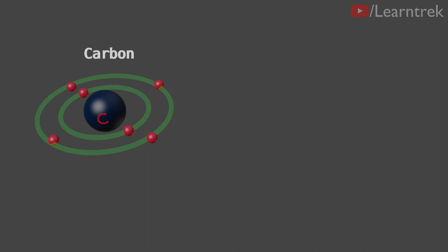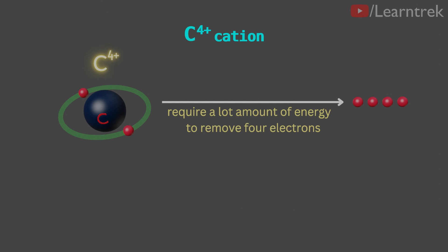If carbon loses 4 electrons and forms a C4 positive cation, then it would require a lot of energy to remove 4 electrons.